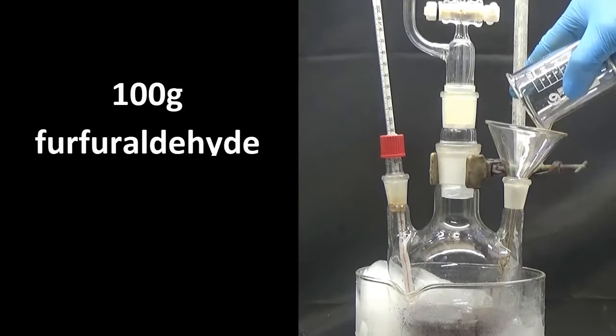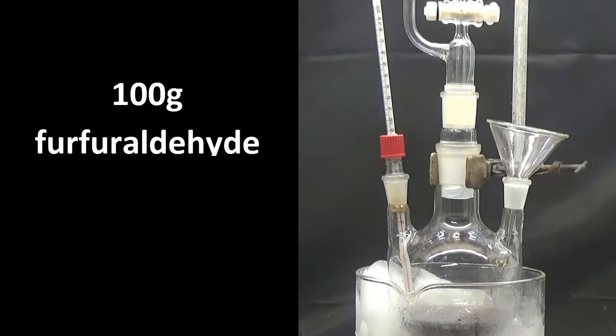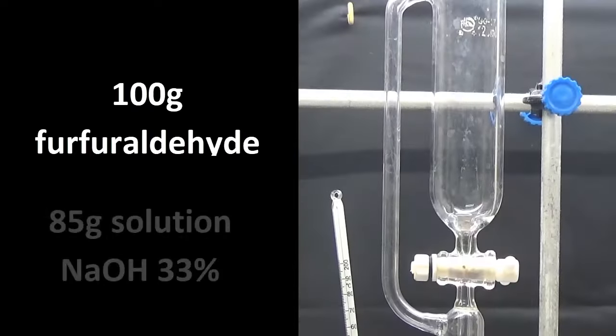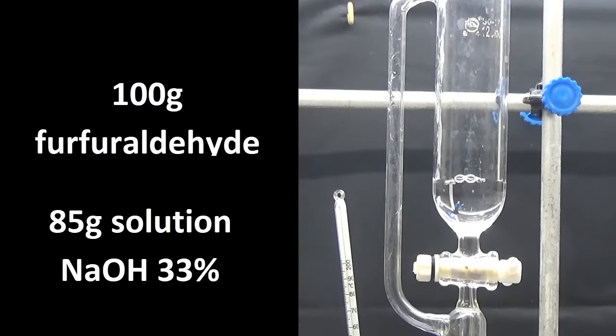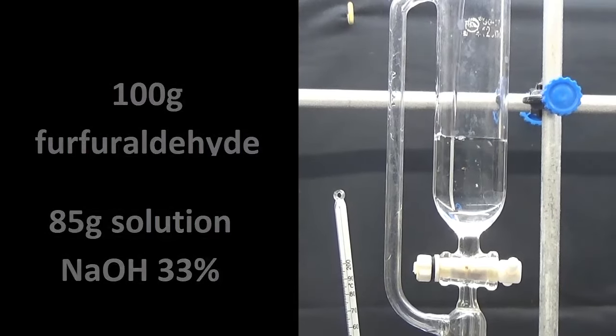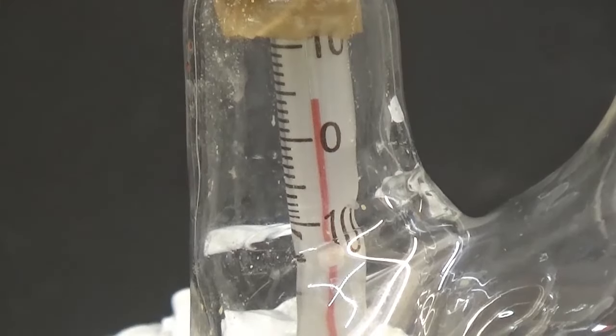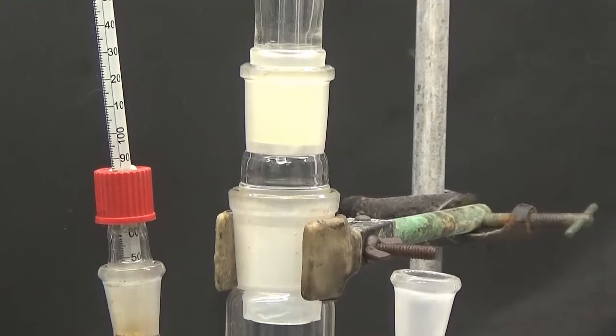In a 500 milliliter flask with an addition funnel, a thermometer and a bath of ice, we put 100 grams of furfuraldehyde in the addition funnel. Put 85 grams of 33 percent sodium hydroxide solution. When furfuraldehyde reaches a temperature below 10°C, slowly add the sodium hydroxide solution without allowing the temperature to exceed 20°C.